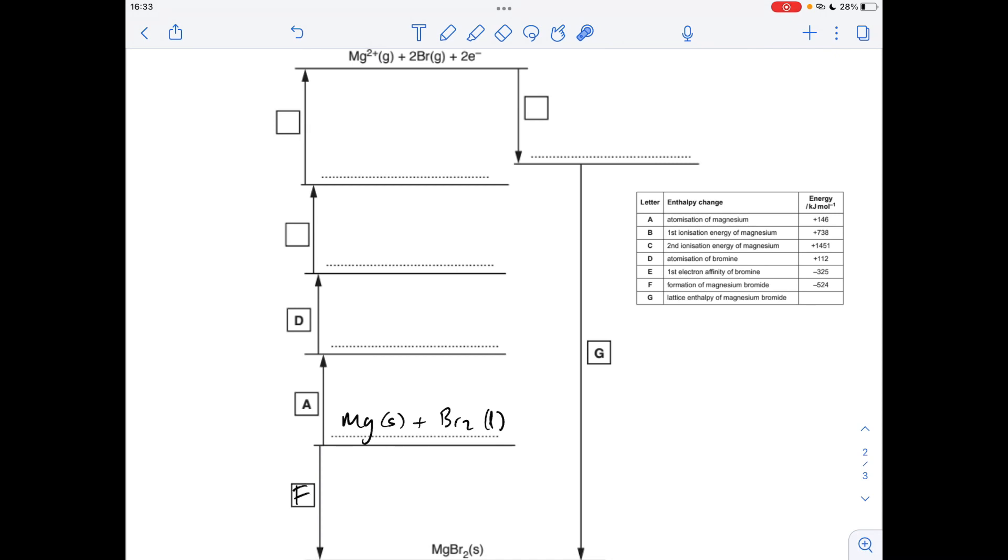So we're told from the table here that this process is A, so that's the atomisation of magnesium, so we're changing this solid magnesium into a gaseous atom. Process D now, so that is the atomisation of bromine, so we're going to generate two gaseous bromine atoms here. Obviously we'll have the Mg gas as well.